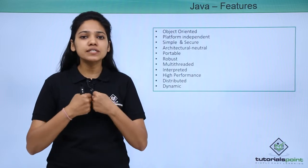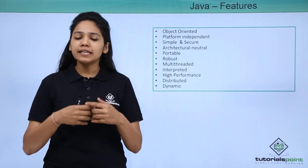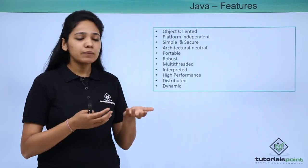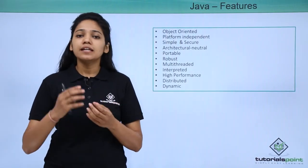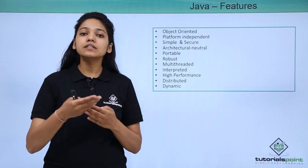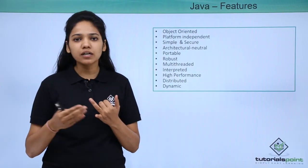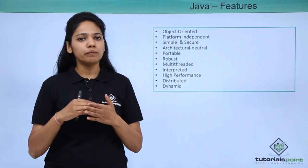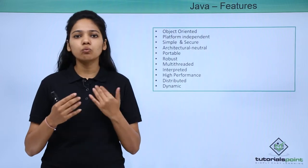In Java we need to first learn what an object is. In the world, anything that you consider is an object — a world, an animal, a human can all be considered objects. Let us take a human: a human has certain complexion, name, or age — these are the data. The behaviors of a human are sleeping, talking, walking, etc.